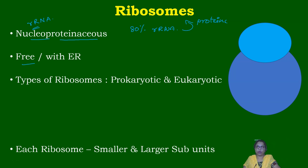There are two types of ribosomes: they are either freely present in the cytoplasm — called free ribosomes — or they may be attached to the endoplasmic reticulum. When ribosomes are attached to the endoplasmic reticulum, it is called rough endoplasmic reticulum.